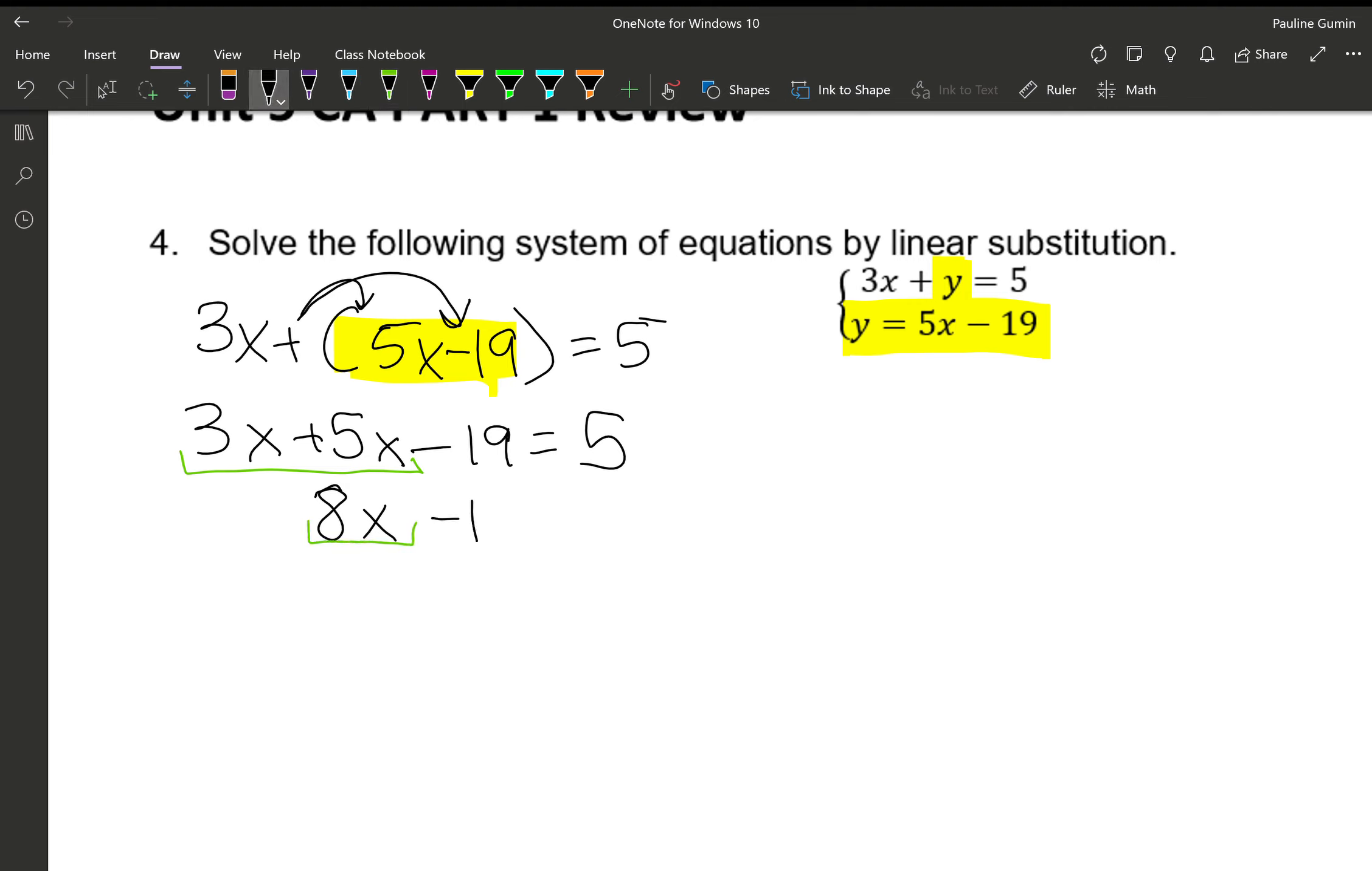So now I have 8X minus 19 equals 5. What do you think we should do next? Let's add 19 to both sides. My computer is being sensitive today. Oh, I think it's my bracelets. Let me take my bracelets off. There we go. So on the left-hand side, just 8X remains because 19 and negative 19 cancel. 5 plus 19 is 24. And let's finish by doing what? Dividing. X equals 3. Wondrous.